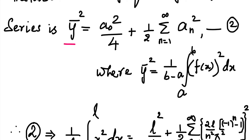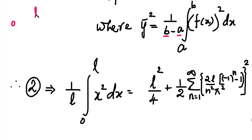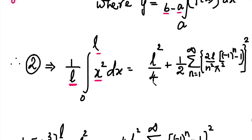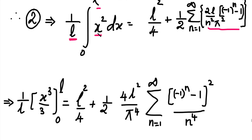The value of y-bar squared is 1 divided by (b minus a) times integral from a to b of [f(x)]² dx. With limits 0 to L, this becomes 1 by L times integral from 0 to L of x² dx. The right hand side is a0² by 4 plus (1 by 2) times summation of an². Substituting a0 equals L, the first term on the right is L² by 4. Integrating the left side: integral of x² equals x³/3, with limits 0 to L, giving L³/3, and multiplied by 1/L gives L² by 3.